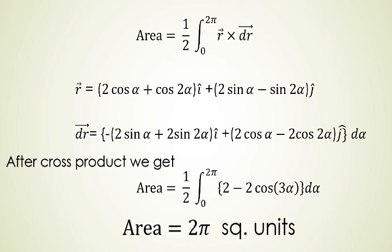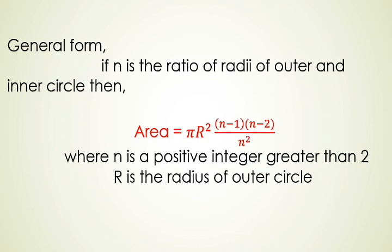If the radius of the inner circle is not one-third but whatever ratio we want, say if n is the ratio of radii of outer and inner circle, then our area equals πr²(n-1)(n-2)/n². This is the general form, and applying this we can also calculate our solution. Let's move to another question.